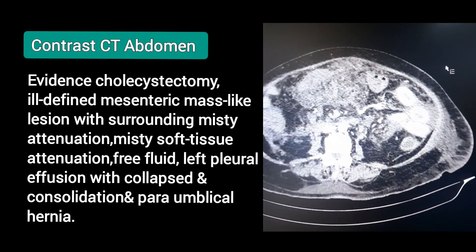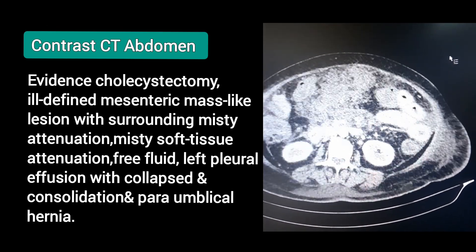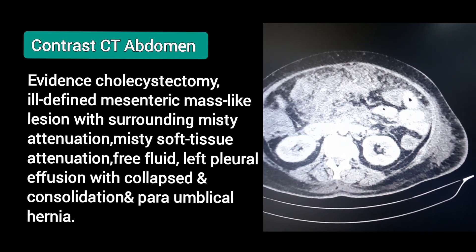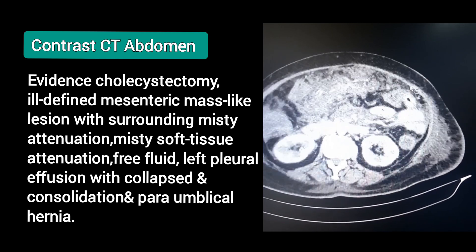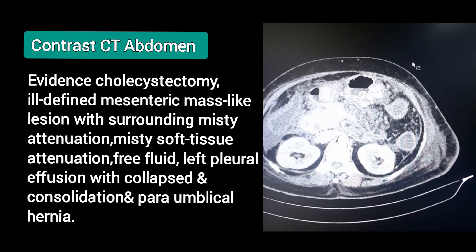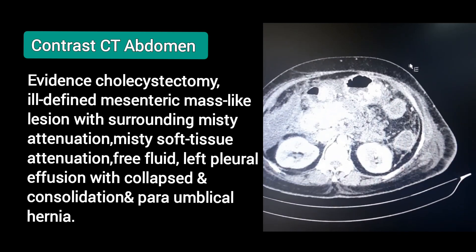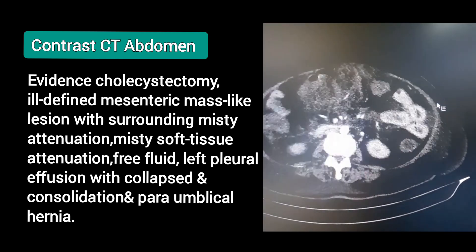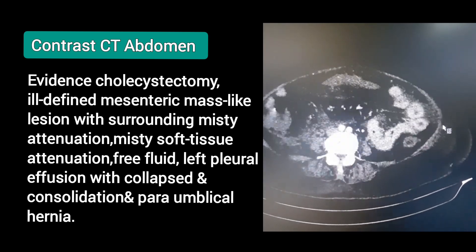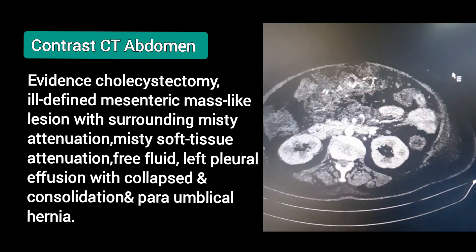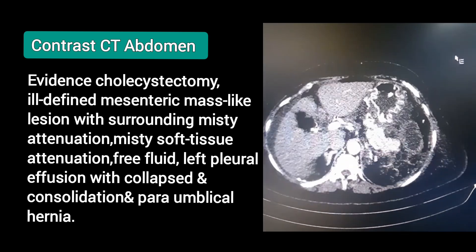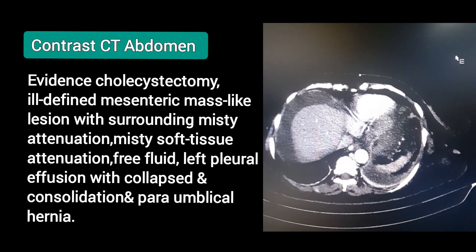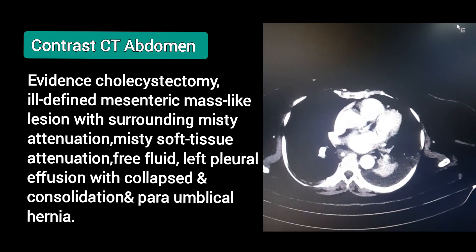Contrast CT abdomen shows evidence of cholecystectomy, an ill-defined mesenteric mass-like lesion with surrounding misty attenuation, misty soft tissue attenuation, free fluid, left pleural effusion with collapse and consolidation, and a para-umbilical hernia.